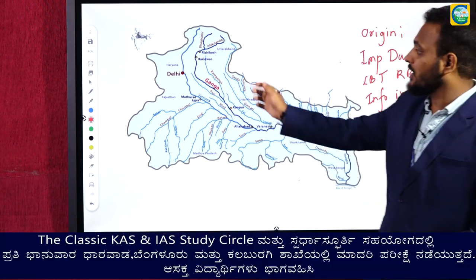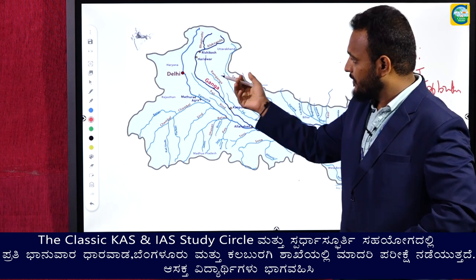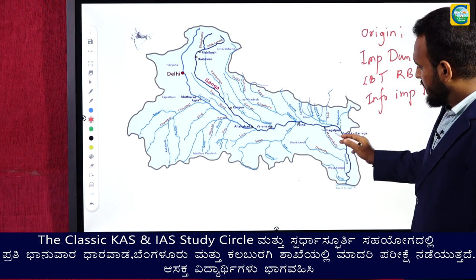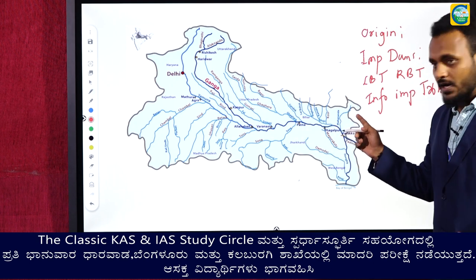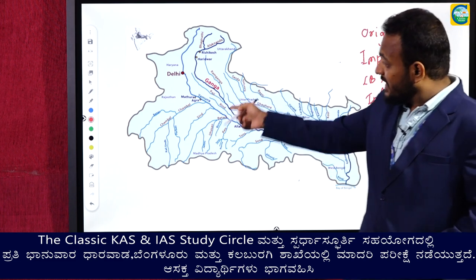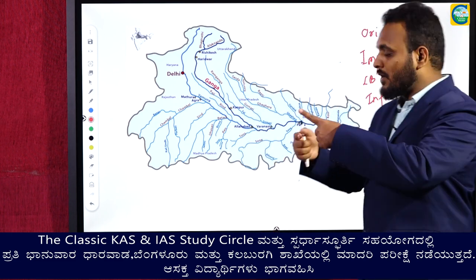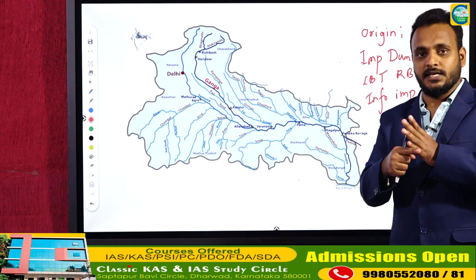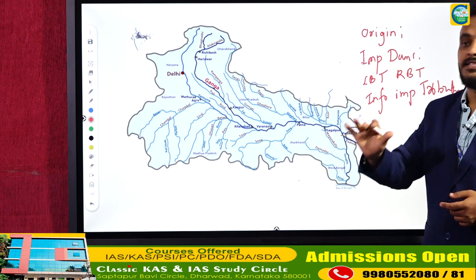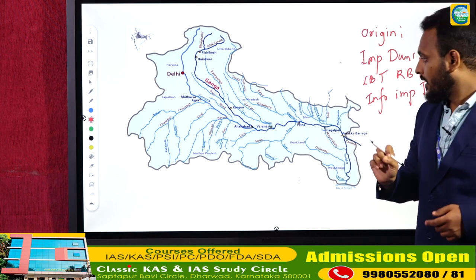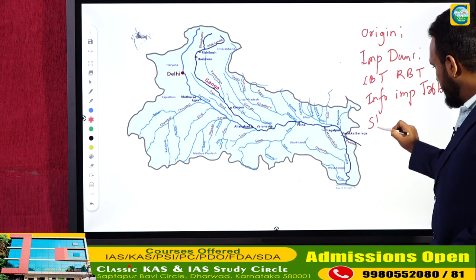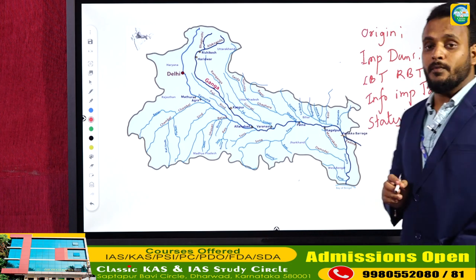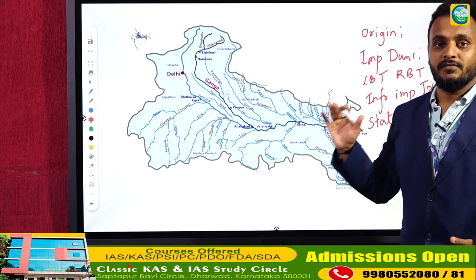If I concentrate on Ganga, it flows first in Uttarakhand, then enters Uttar Pradesh, then Bihar, and then West Bengal. The Ganga major river flows through four important states: Uttarakhand, UP, Bihar, and West Bengal. I will write the states that it flows through as major points under the Ganga river system.